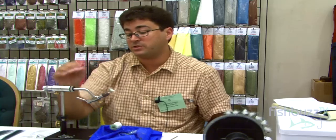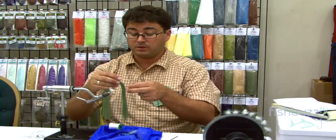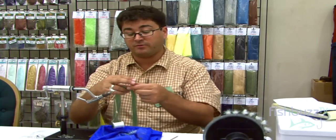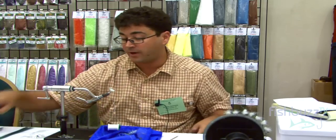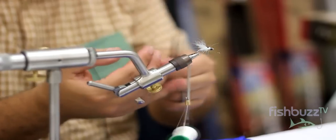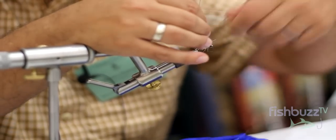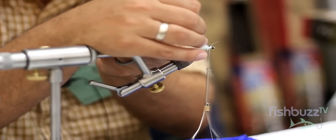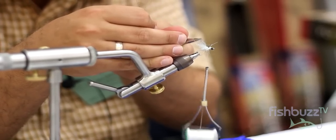This fly represents a little baitfish or a little shrimp, kind of does it all. Next step is a topper of peacock colored crystal flash. We're going to just do two strands. Going to wrap it around the thread and bring it up and tie it right in on top. We're going to do some cuts and we could cut these at a little different length.